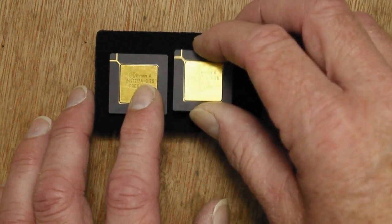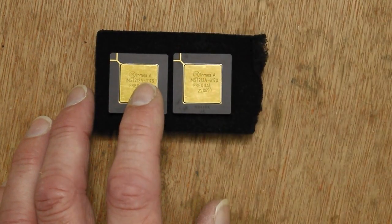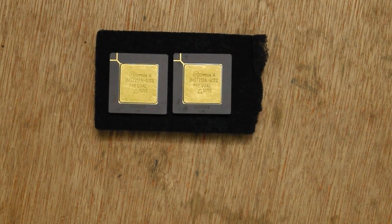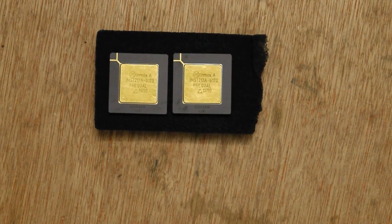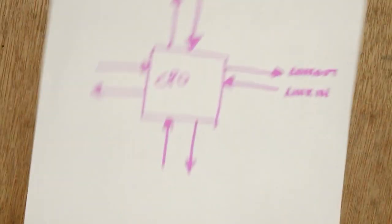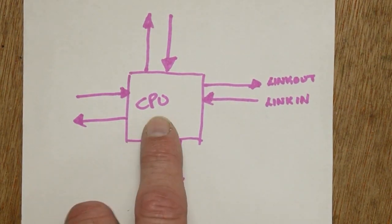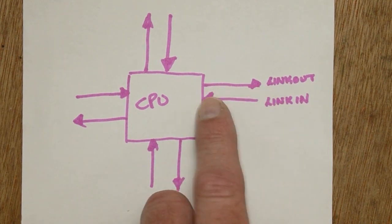So each of these has four independent links which are serial data links with a very simple protocol, and sending and receiving on those links is actually built into the instructions in the CPU. So that's what a transputer looks like logically - there's a CPU and then four links, each of which is a serial data out and a serial data in.